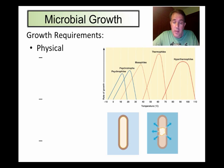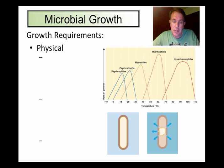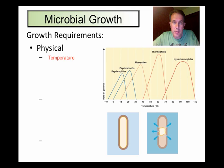The requirements for microbial growth can be divided into two main categories: the physical requirements and the chemical requirements. The physical requirements that are most important are temperature, pH, and osmotic pressure.